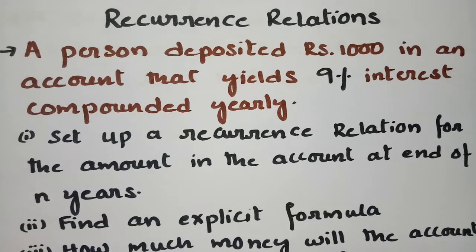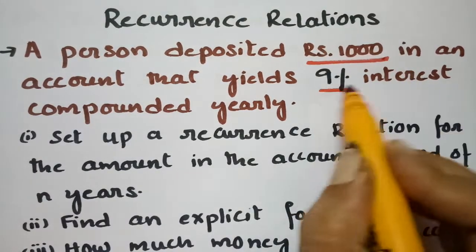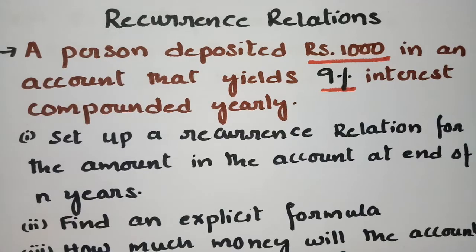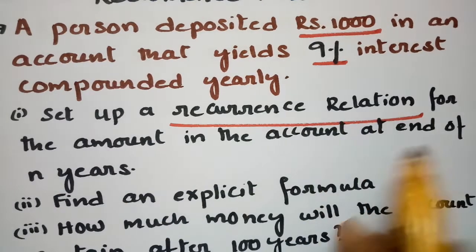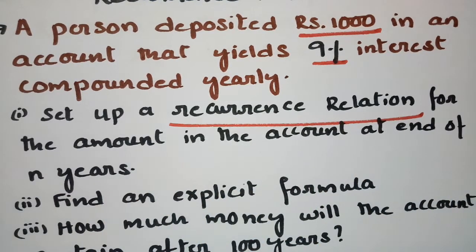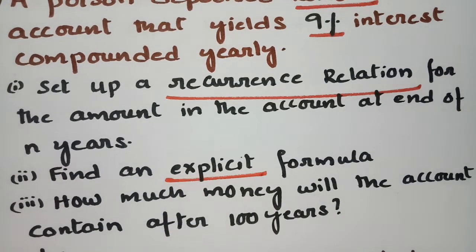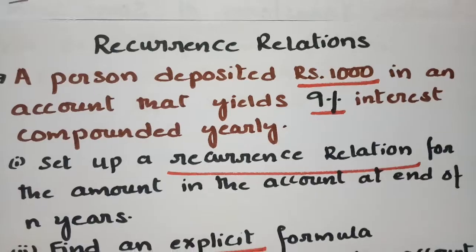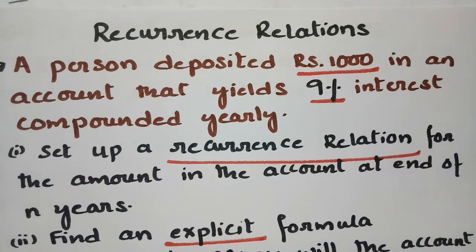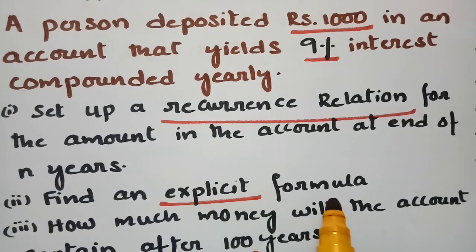In today's video I am going to solve a problem from recurrence relations in discrete mathematics. A person deposited 1000 rupees in an account that yields 9% interest compounded yearly. We have to set up the recurrence relation for the amount in the account at the end of n years, find an explicit formula, and determine how much money the account will contain after 100 years.